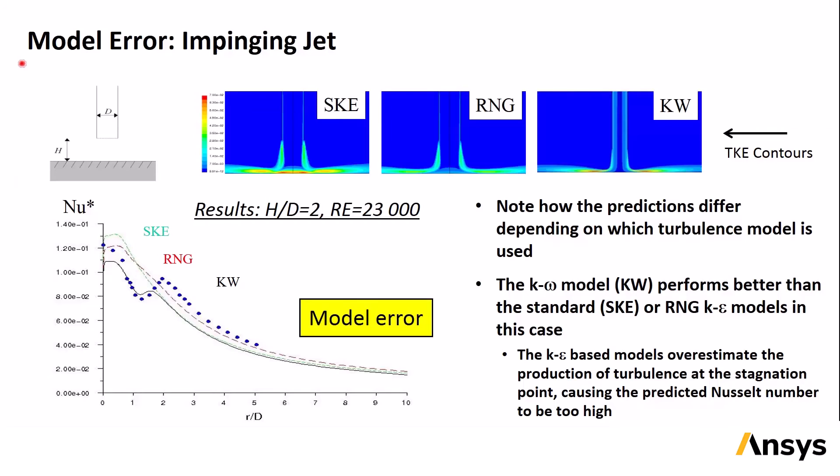An example of model errors in the impinging jet case can be seen here, where the flow has been calculated with different turbulence models. In this case, the models are the standard k-epsilon model, which is labeled SKE, the RNG k-epsilon model, which is labeled RNG, and the standard k-omega model, which is labeled KW. The plot on the left shows the Nusselt number on the plate as you go radially outward from the centerline. The difference between the data and the CFD results is caused by model error, or at least that is assuming that there are no errors in the measurements. The different models used here show different levels of modeling error in the plot on the left, and this can be highlighted from the contour plots of the turbulent kinetic energy across the top of the slide, which show clearly that very different predictions can be obtained depending on which model is selected.